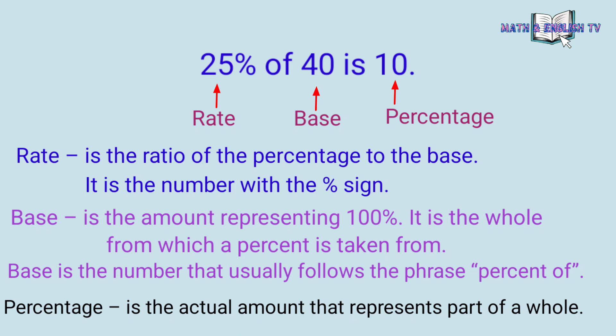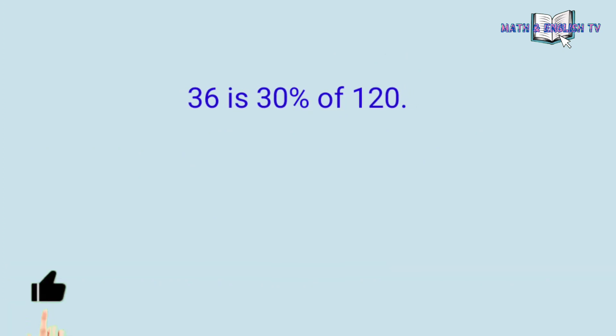Bahagi lamang ito ng kabuuan o ng 100%. Tingnan naman natin ito. 36 is 30% of 120. Ang 36 ay 30% ng 120. I-identify natin yung bawat element ng percent dito. Para mabilis yung pag-identify natin, tingnan muna natin itong may percent sign na number. Itong 30%. Ito yung tinatawag na rate. Madaling tandaan yung rate kasi may percent sign yung number.